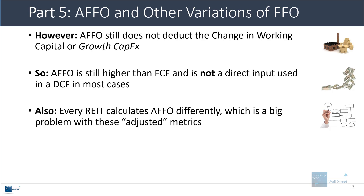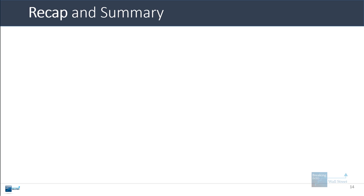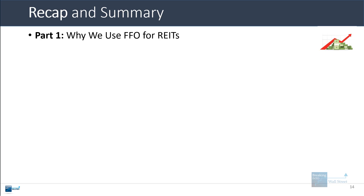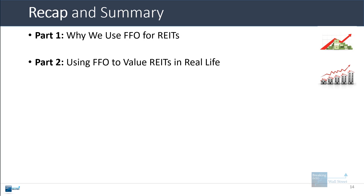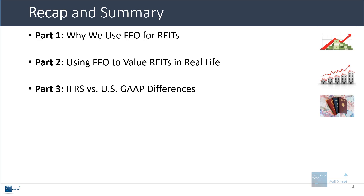Another issue is that every REIT calculates AFFO a little bit differently, which is a big problem with many of these metrics — that's why we generally prefer to stick to more standard ones like funds from operations that most people and companies agree on. In summary: FFO gives a more accurate view of a REIT's operational performance by adding back depreciation or unrealized gains and losses under IFRS and adjusting for realized gains and losses, making it an improved version of net income. For valuation, you can use FFO as a multiple — equity value divided by FFO, or the P/FFO multiple. Under IFRS, REITs mark properties to market value periodically instead of depreciating them, so you make that adjustment instead of the depreciation adjustment.